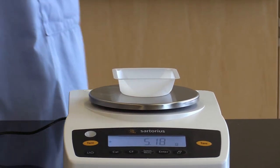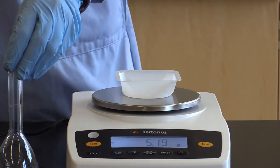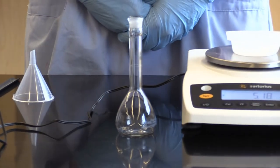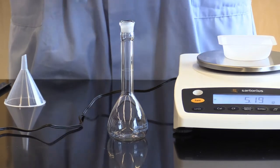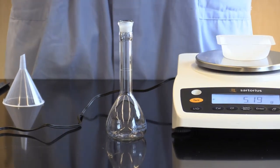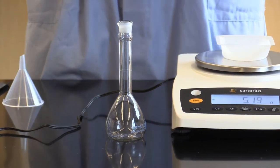And then today we are going to use a volumetric flask. It is one of the most accurate instruments that we have available to us in the lab, and this will allow us to accurately measure up to 100 mils. They do come in a variety of sizes.